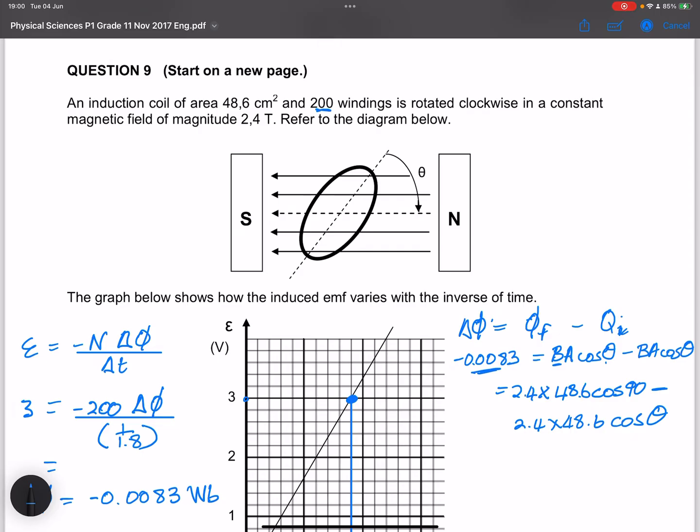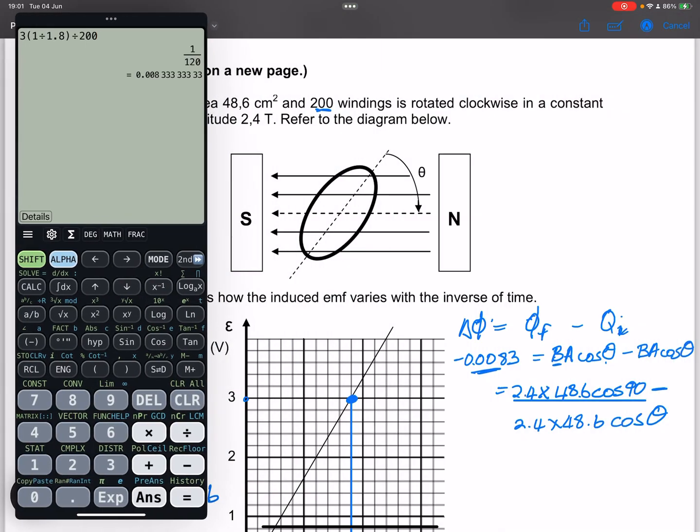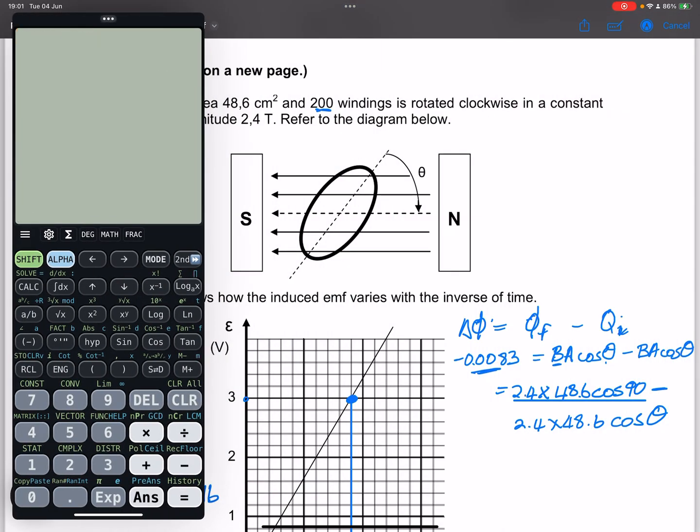Now notice, ladies and gents, we know that cos of 90 is... I said cos of 90 is 1, but it actually is 0. So that means that becomes 0. So we've got negative 0.083, which is equal to... and it makes sense because remember they said that the magnetic flux becomes 0 there.